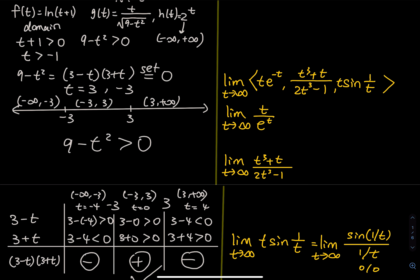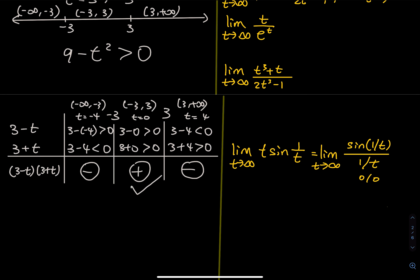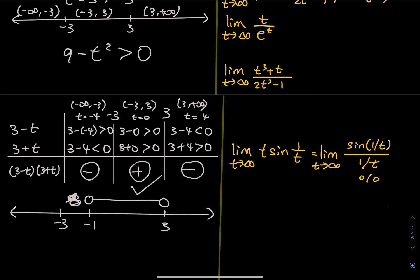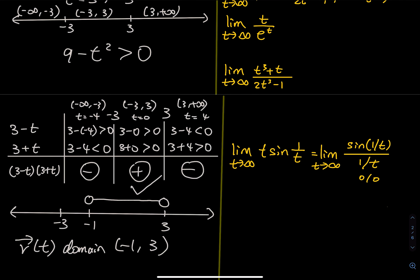We also consider t greater than negative 1 from the ln restriction, and negative infinity to positive infinity from the exponential. Since t must be greater than negative 1, this overwrites the piece between negative 3 and negative 1. So the domain of this vector function r of t is from negative 1 to positive 3, written as the interval (−1, 3).